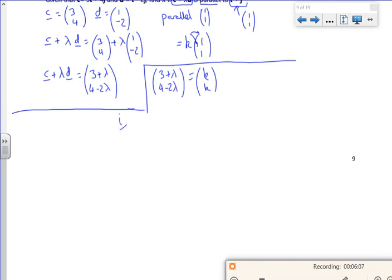So if I look in the i direction, the top line, I've got 3 plus lambda is k. And j is 4 minus 2 lambda is k. You've got me equal to each other. So 3 plus lambda is 4 minus 2 lambda. So 3 lambda is 1. So lambda is a third.